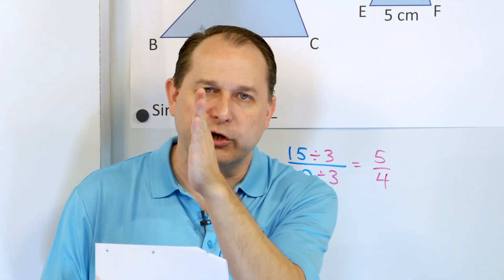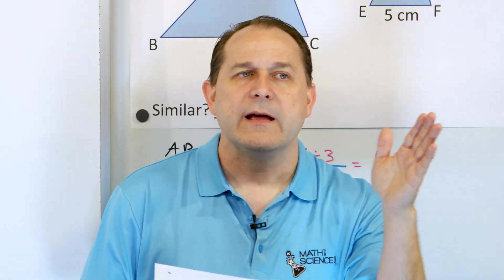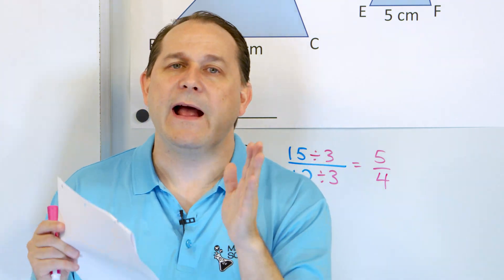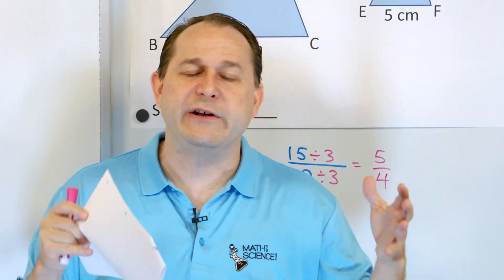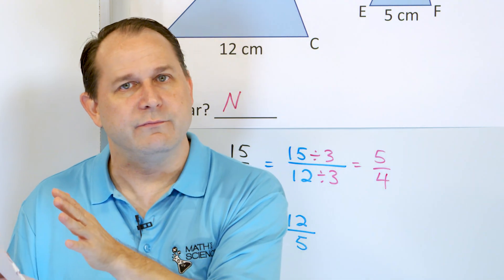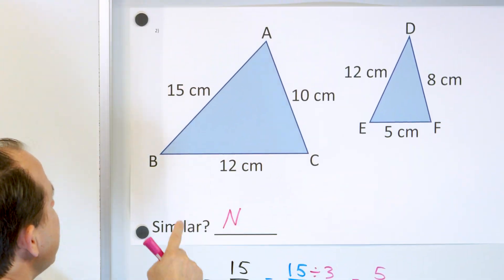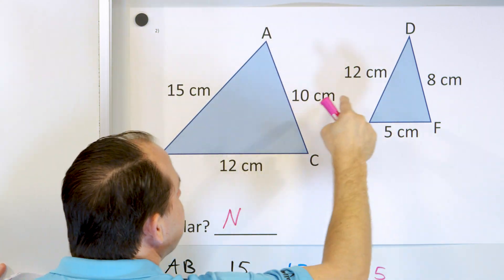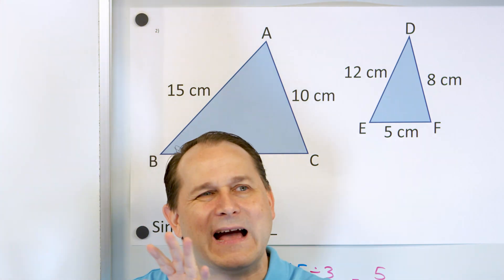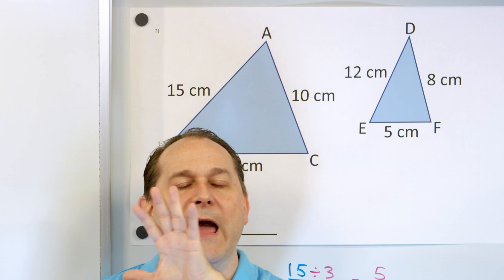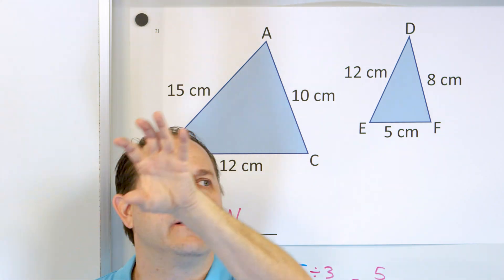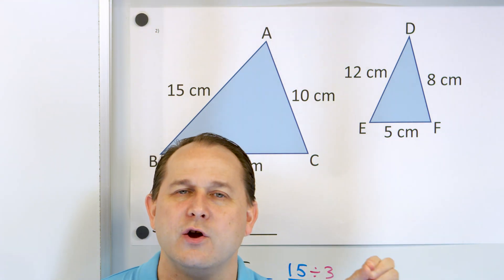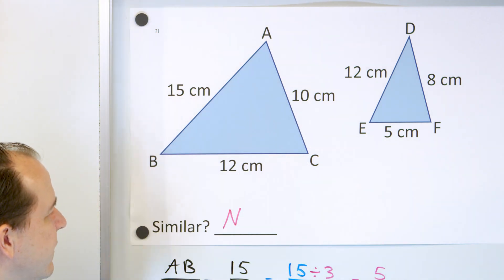You have to check the ratio for all corresponding sides, and all three ratios have to be the same. That confirms that one triangle is stretched in all three directions by exactly the same amount compared to the other. Also notice: when writing ratios, you must pick triangle 1 and triangle 2 and be consistent — always divide in the same direction for all three ratios.